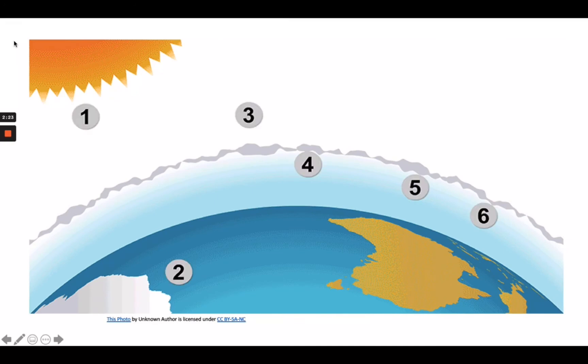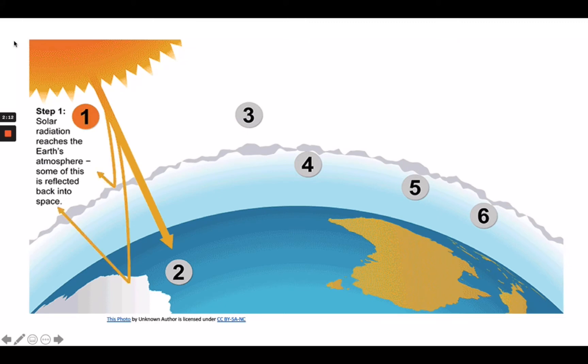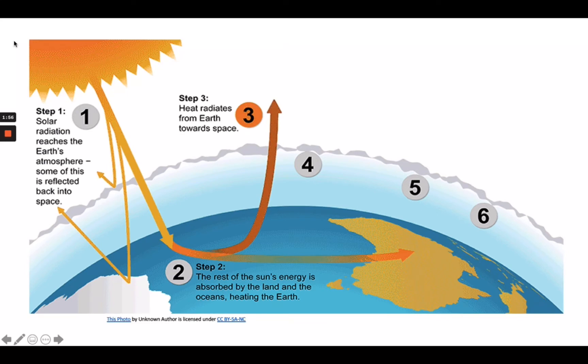Let's take a look at how a greenhouse effect occurs. First, solar radiation reaches Earth's atmosphere. Some of it is reflected back into space. The rest of the sun's energy is absorbed by the land and the oceans, heating the Earth. Third, heat radiates from Earth toward space. Fourth, some of this heat is trapped by greenhouse gases in the atmosphere, keeping the Earth warm enough to sustain life.